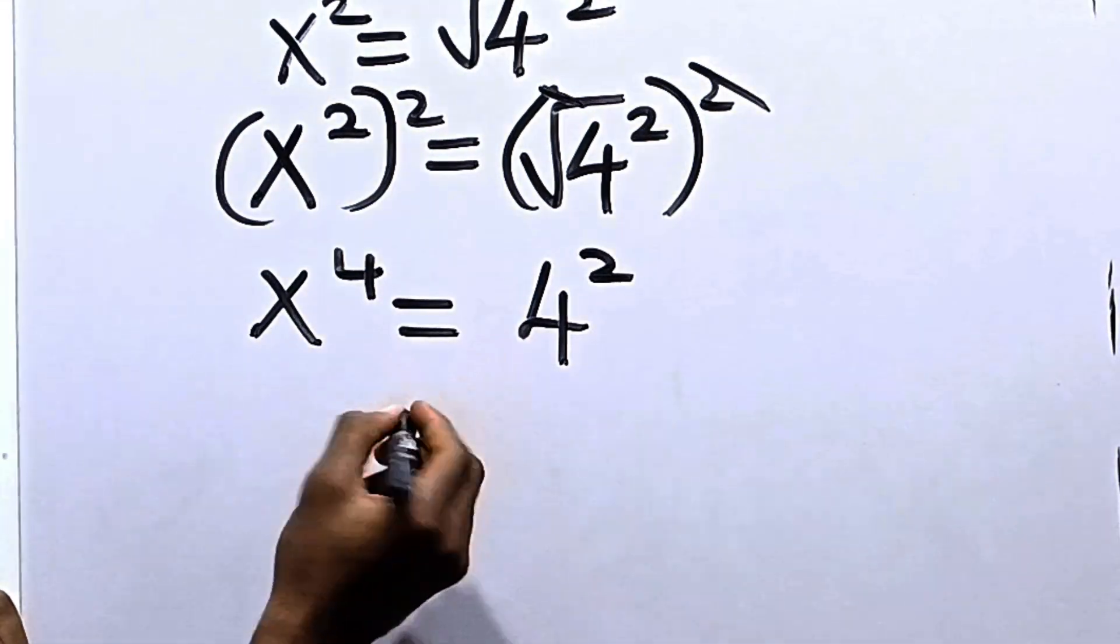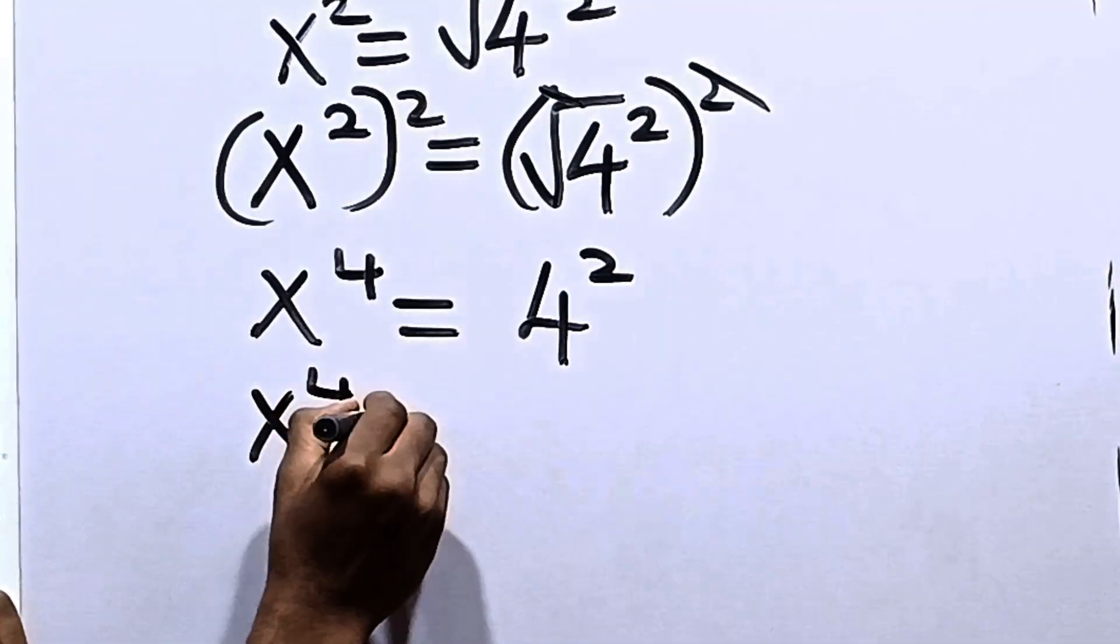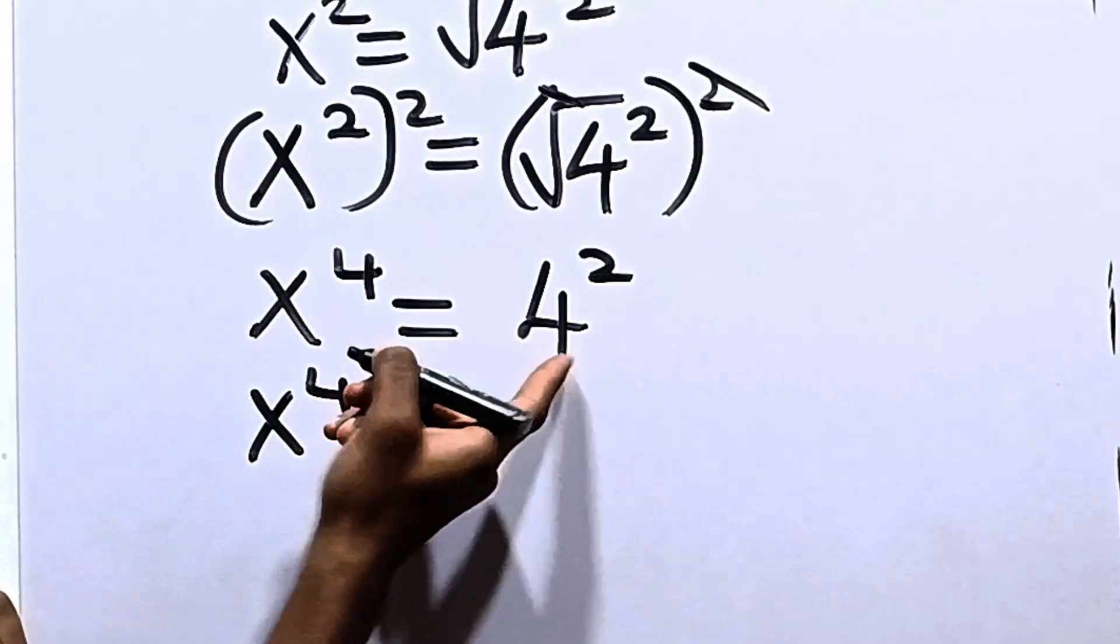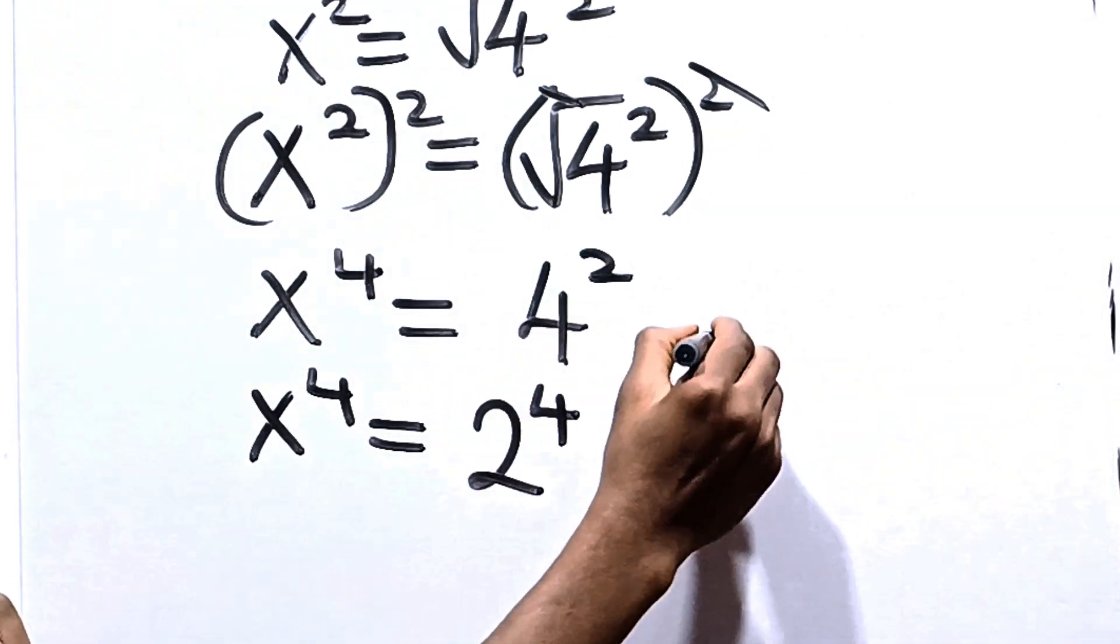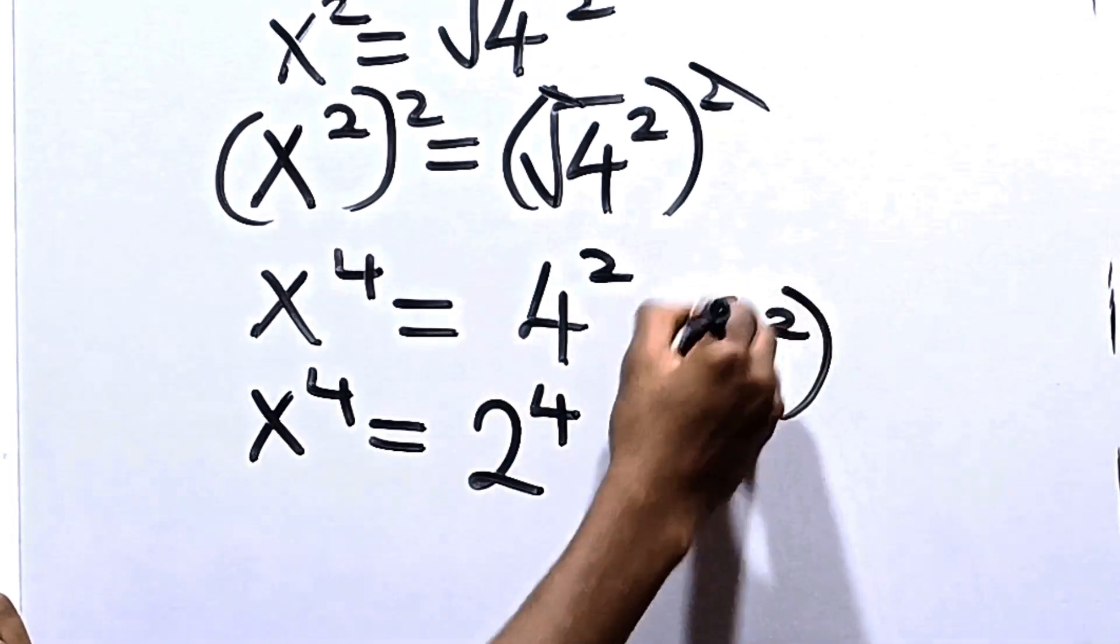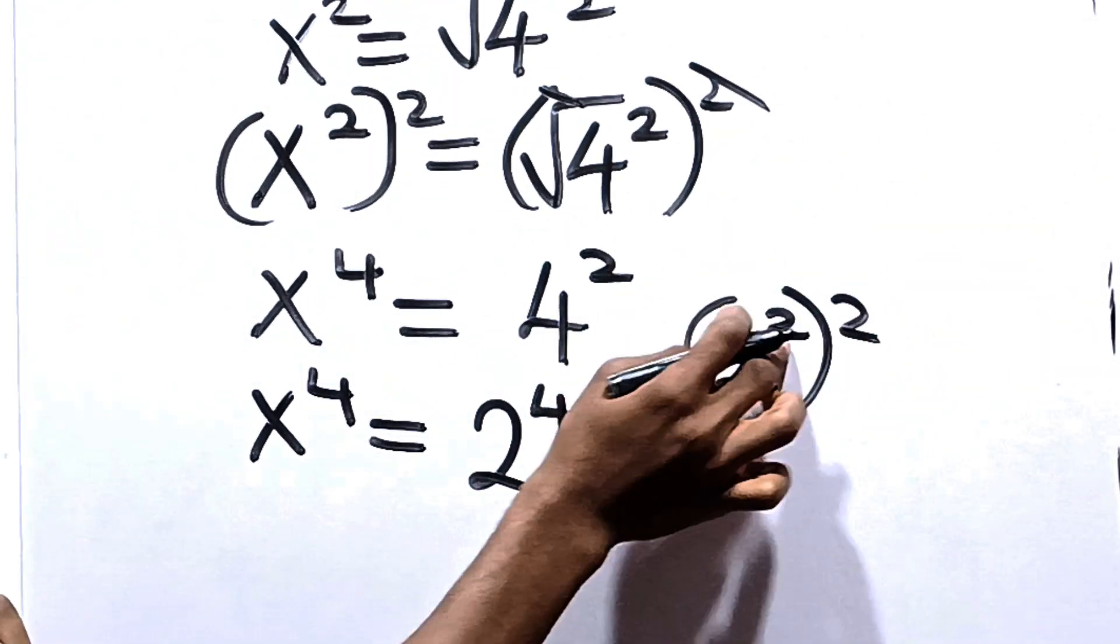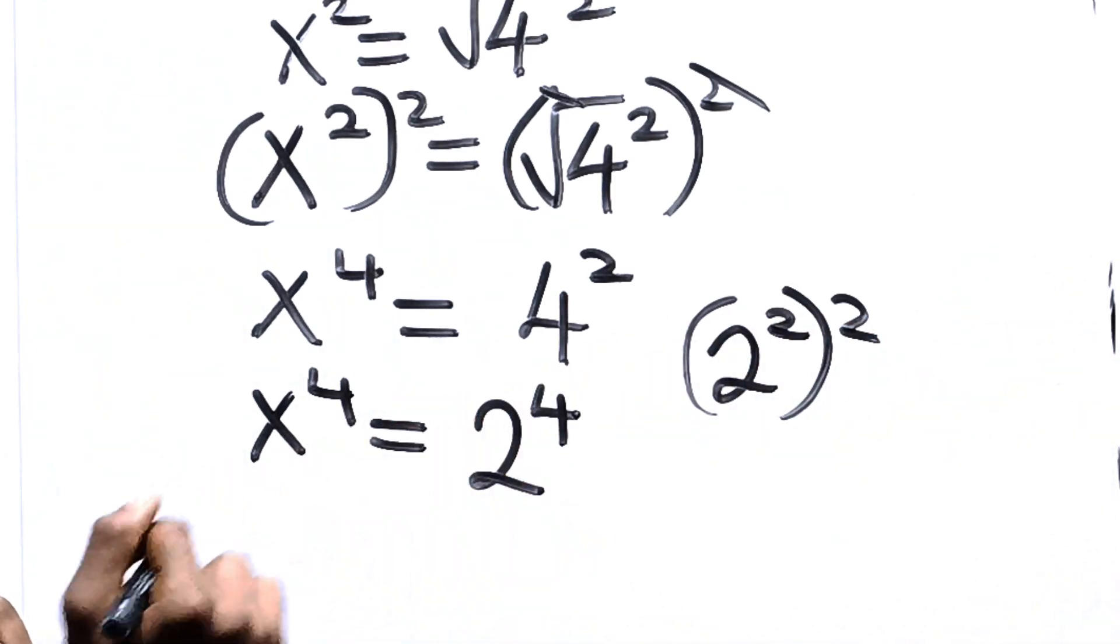Now, 4 squared can be expressed to be equal to, so we have x raised to the power of 4 to be equal to, now 4 squared can be written as 2 to the power of 4, because 4 squared is equal to 2 squared. And when you have this, you multiply the power, so 2 times 2 is 4.